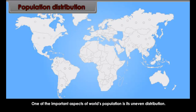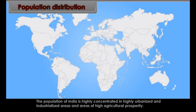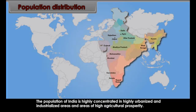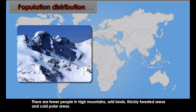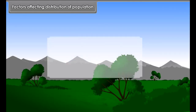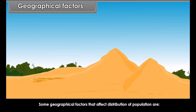Population Distribution. One of the important aspects of the world's population is its uneven distribution. The population of India is highly concentrated in highly urbanised and industrialised areas and areas of high agricultural prosperity. There are fewer people in high mountains, arid lands, thickly forested areas and cold polar areas. There are geographical, social and economic factors which control the distribution of population, and all these factors work in combination.